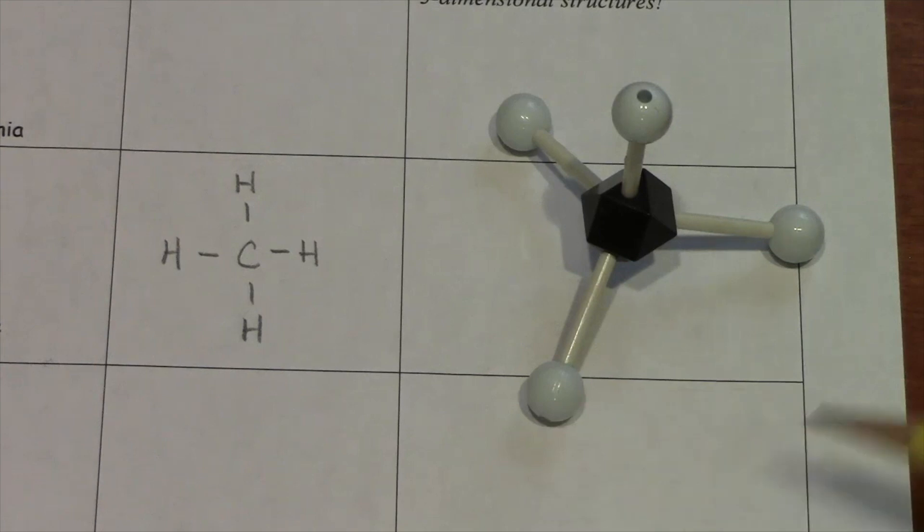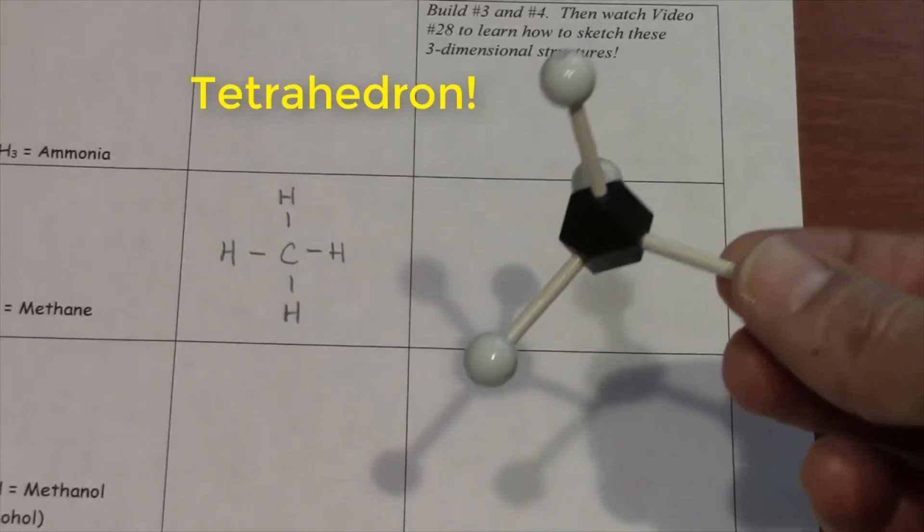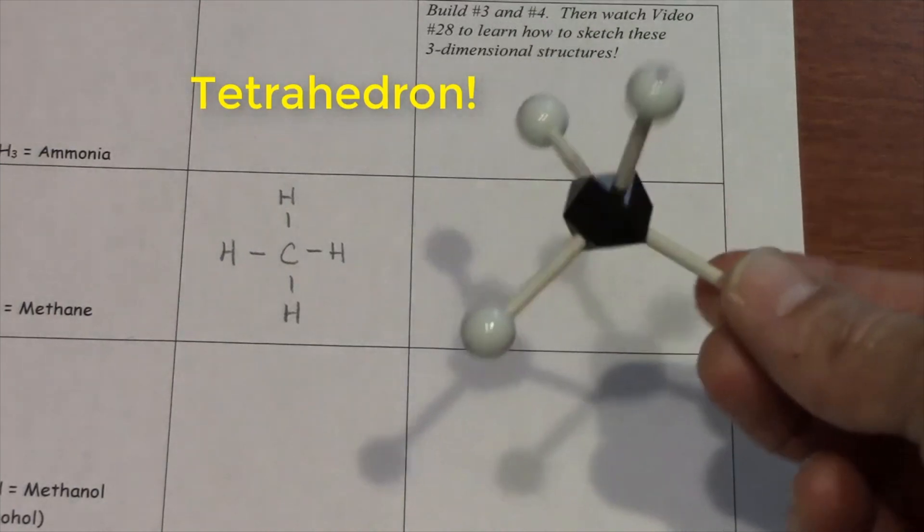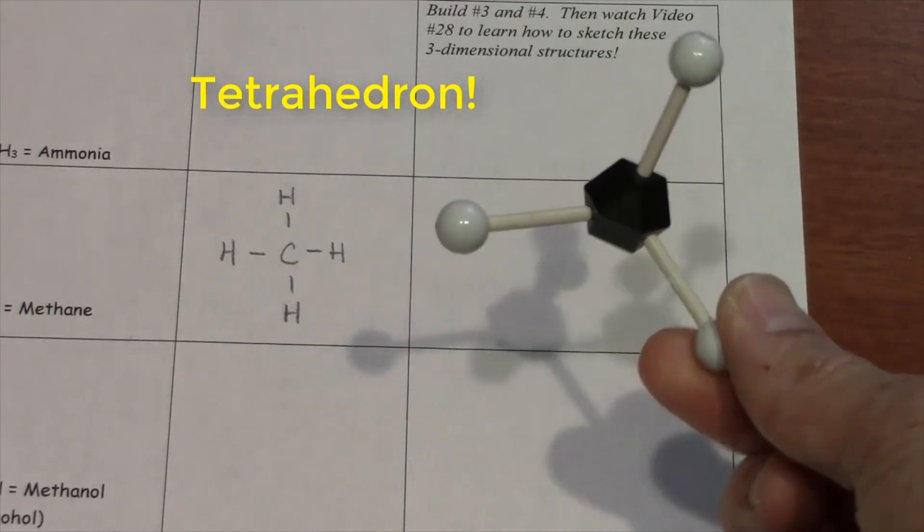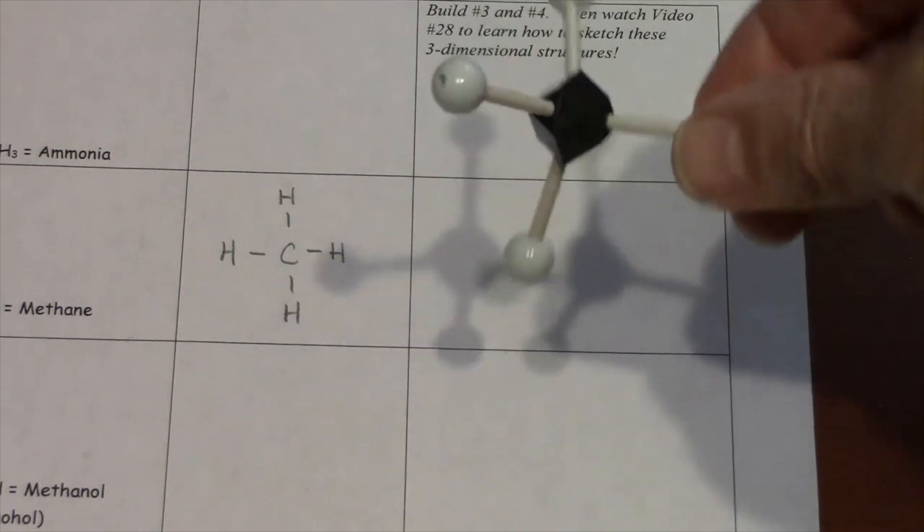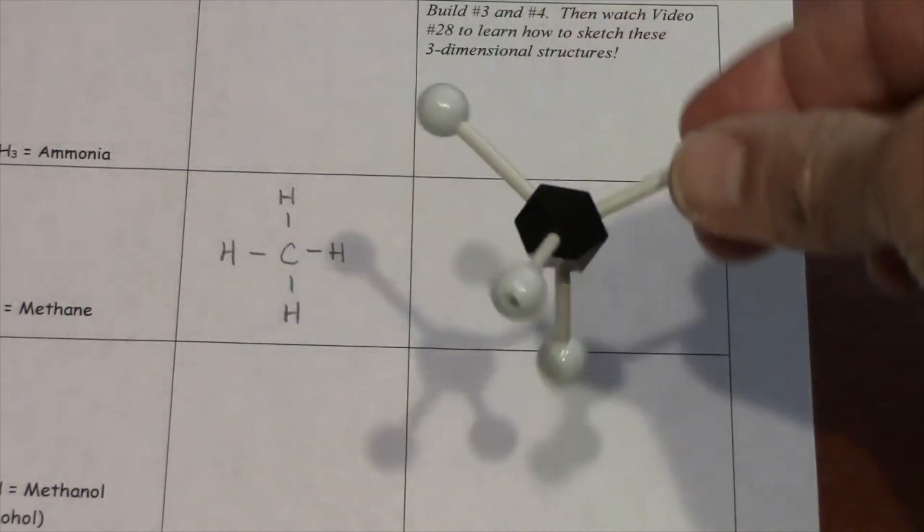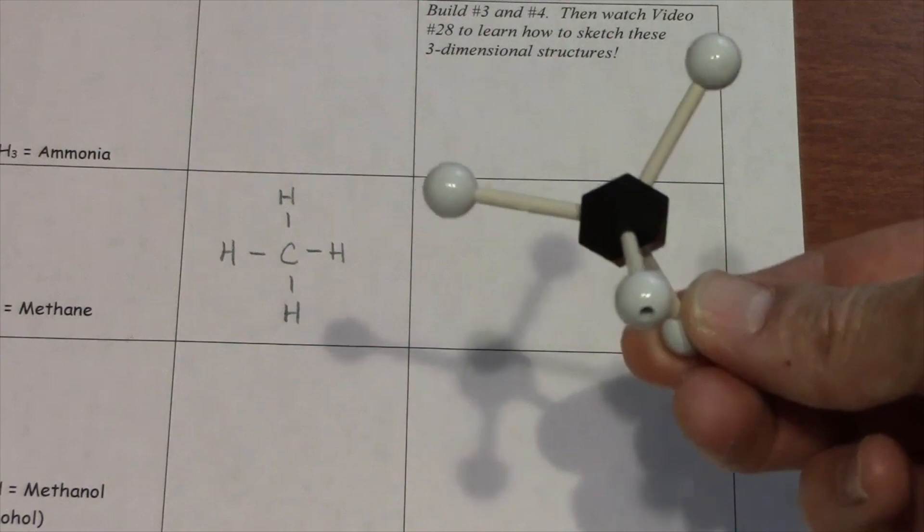Number four, methane, comes up with this model. This is the most famous shape in chemistry. It's called a tetrahedron. The tetrahedron has really nice symmetry. You can see from the shadows on my paper. It's really cool.